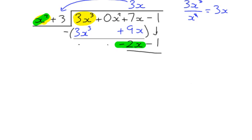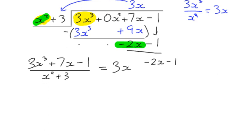And we can say that 3x cubed plus 7x minus 1 divided by x squared plus 3, our quotient is 3x and our remainder is negative 2x minus 1 over x squared plus 3. And I would normally put a plus sign in.